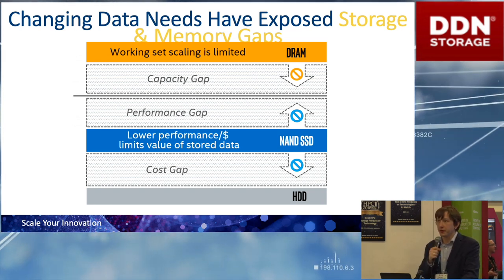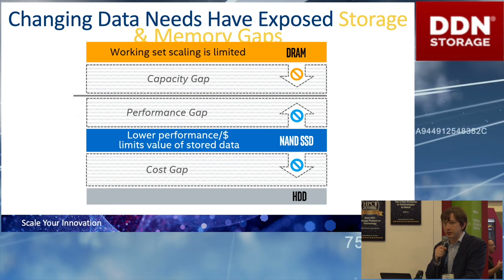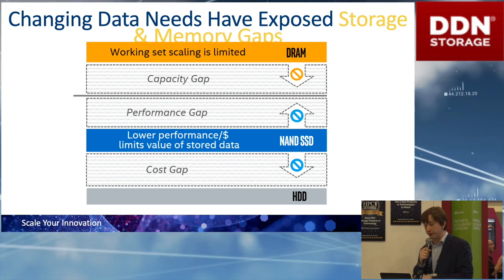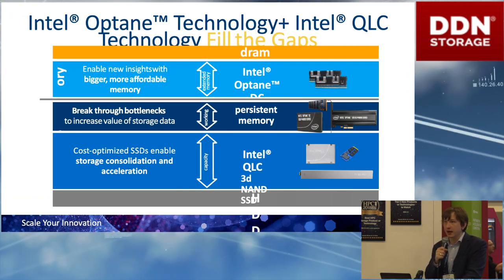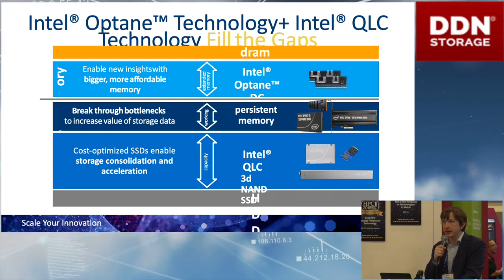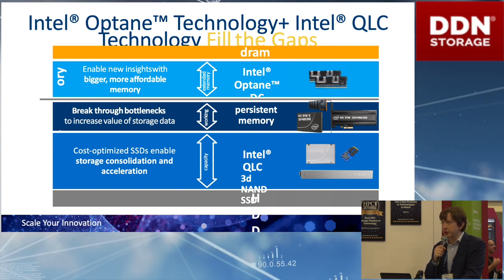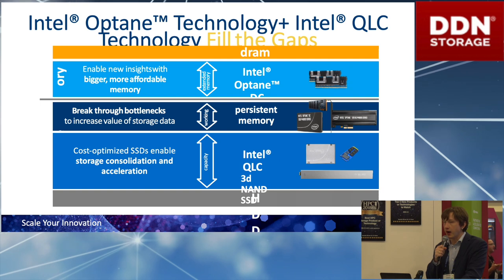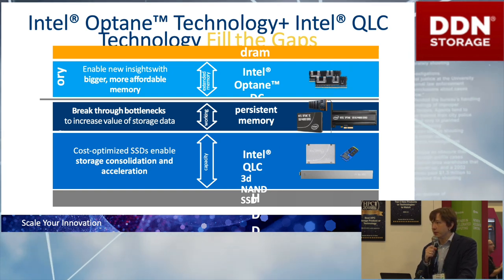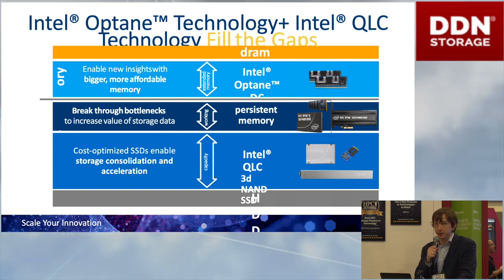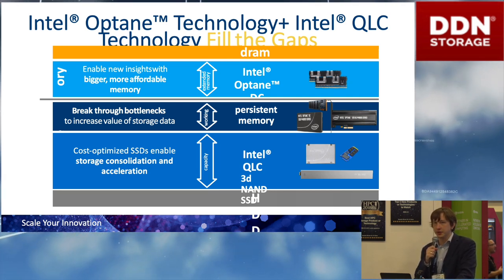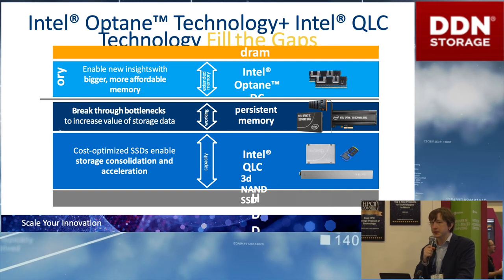We pursued a few different product directions to help you optimize your cluster and node architecture, improving storage and memory performance by introducing a full variety of products. One of them is based on Optane technology. Optane is Intel's name for 3D cross-point memory, which is low latency, very high predictable IO, and cache-line addressable for storage and memory. We produce SSDs based on 3D cross-point — the marketing name is Optane — and they've been available for almost two years.